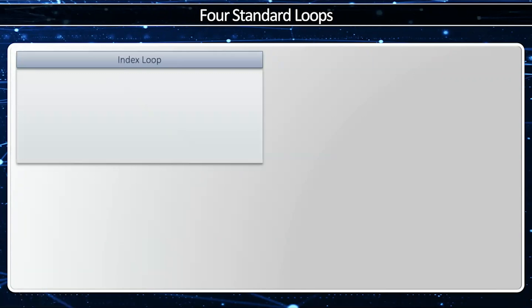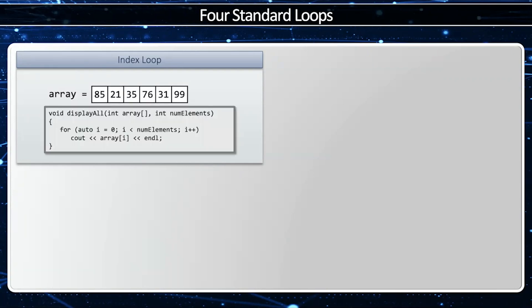There are four standard for loops we use in C++ a lot. The first one is an index loop where I index through an array. Every element in the array is adjacent to each other, and I only have a pointer to the first element and the number of elements. So if I'm going to write a display all, I'm going to start my index at slot zero and keep advancing it all the way until I get to num elements minus one. Notice how I access each element with the square bracket operator.